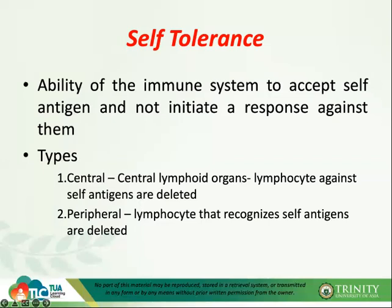There are also other factors that can lead to autoimmune diseases, such as genetics. If you recall the major histocompatibility complex on the short arm of chromosome 6, there are different gene loci, and specific mutations on those genes can lead to autoimmune diseases like type 1 diabetes and ankylosing spondylitis.